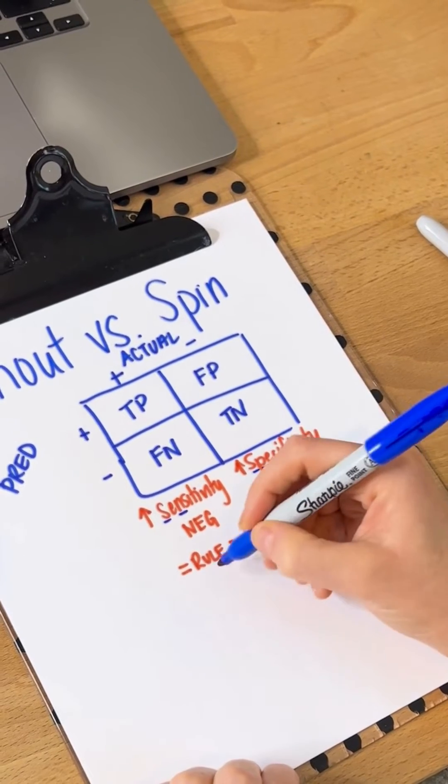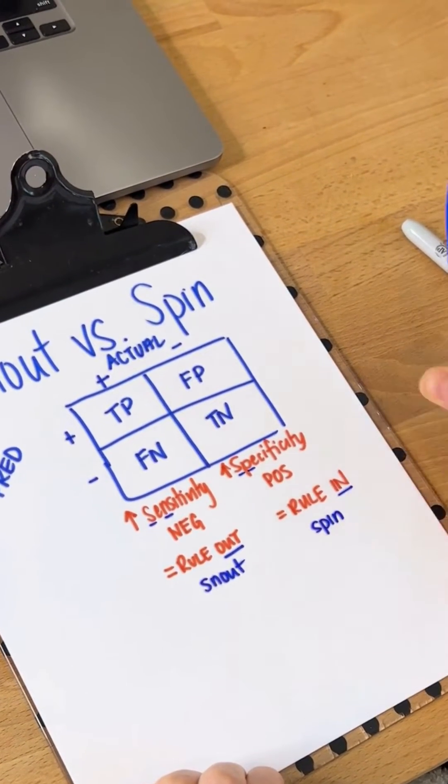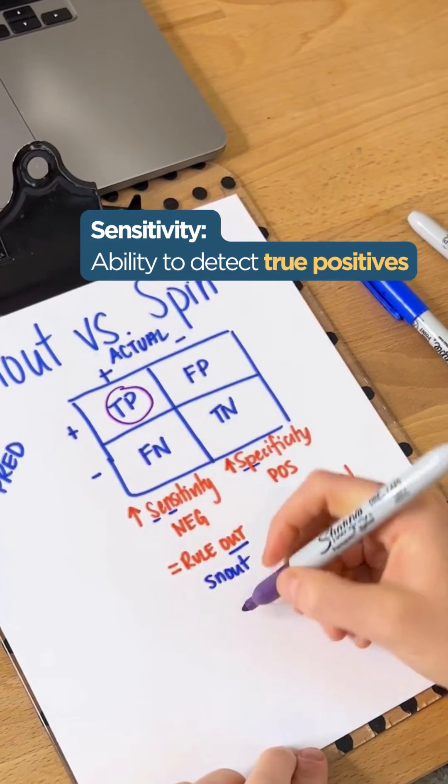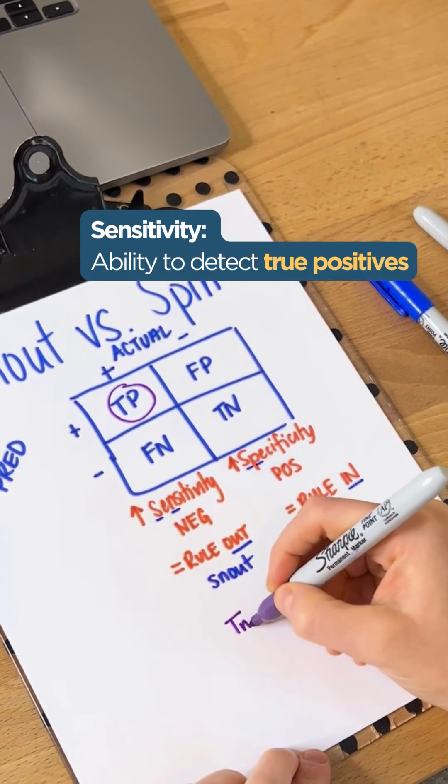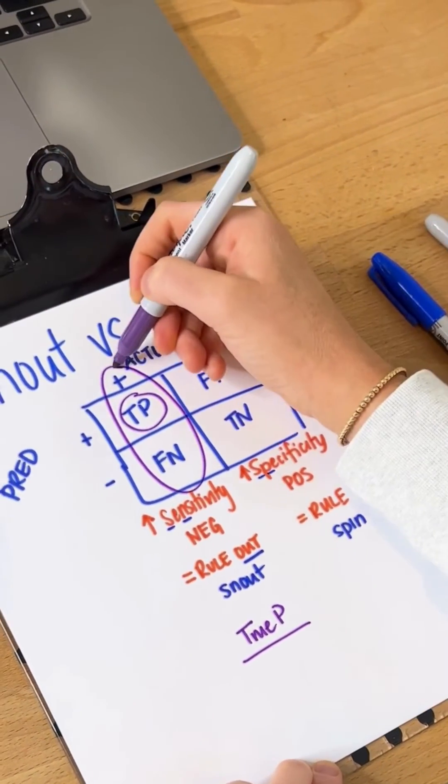Going back to our picture, if we know that something has a high sensitivity, that means it has a strong ability to show if someone has it. So we would take our true positives and divide it by everyone who actually has it.